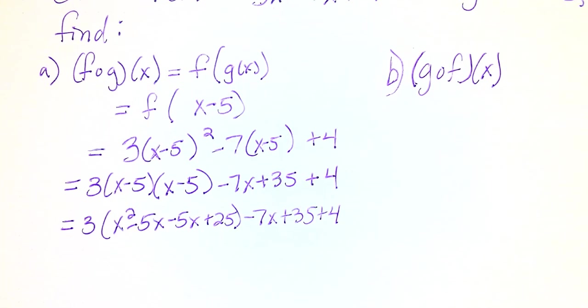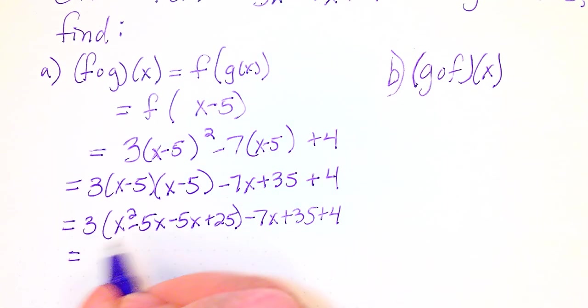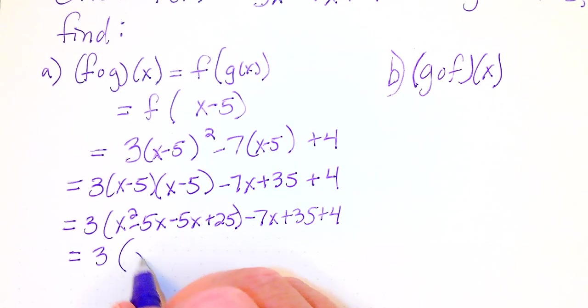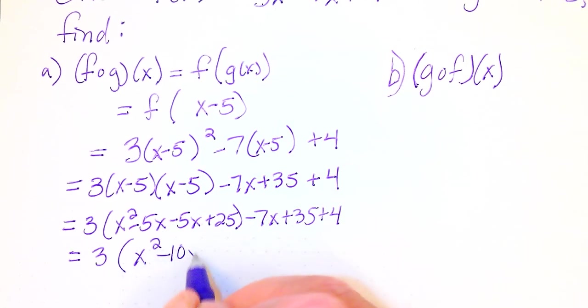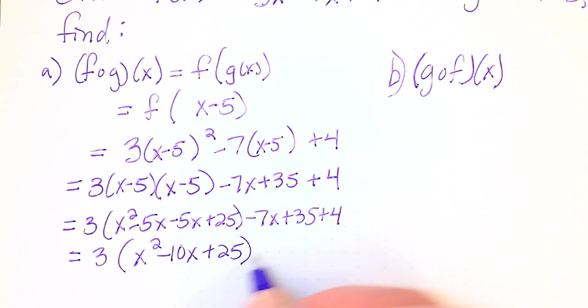Add like terms within that parentheses before we distribute so this is going to be 3 times x squared minus 10x plus 25 bring down minus 7x plus 35 plus 4.